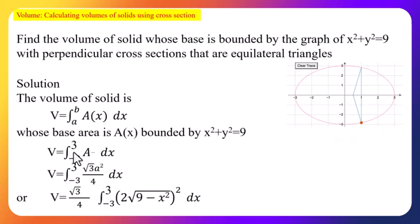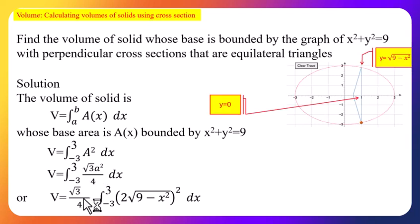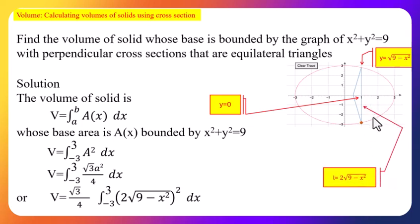The volume is ∫₋₃³ A dx, where A is the area of an equilateral triangle: (√3/4)a², with a being the side length. Taking (√3/4) as a common factor, we need to find a. The y-value on the x-axis is 0, and by the equation of the circle the upper y-value is √(9 − x²). The length of the equilateral triangle's side is 2 times the difference of these y-values.